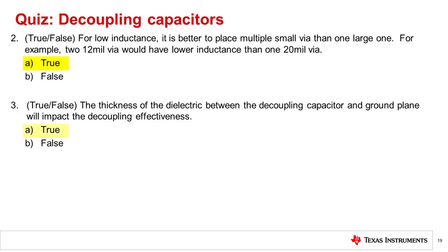The correct answer is True. A thin board means that the via length is short and low inductance. This will reduce the impedance of the decoupling network and make it more effective.